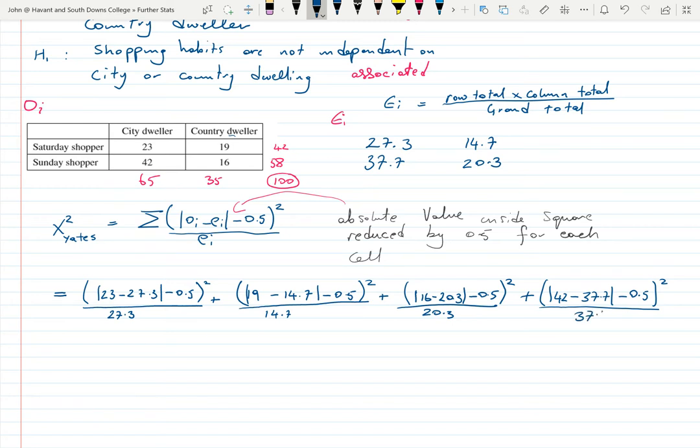Before going straight for the calculator, what I said is that with Yates, because it's two by two, all these numbers will add up to the same thing. Here we've got 23 minus 27.3 take away 0.5, and that equals 4.3 but taking away 0.5 that's 3.8. It's worth checking that these all be 3.8.